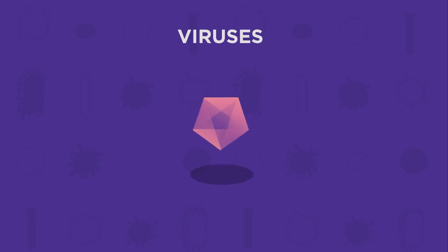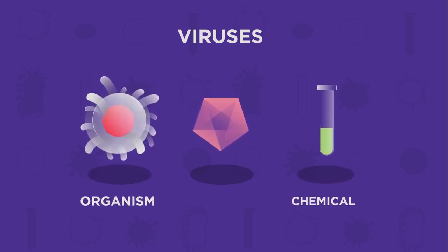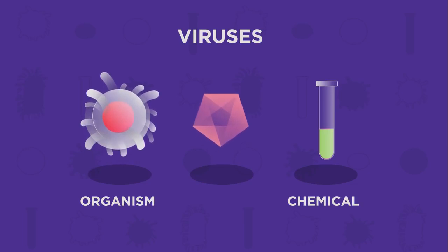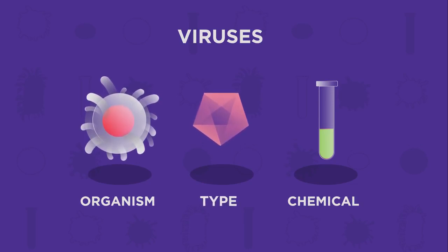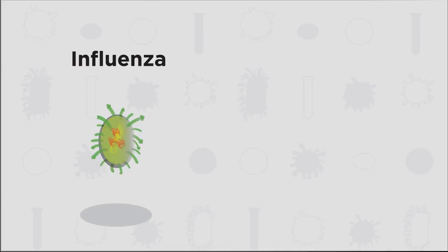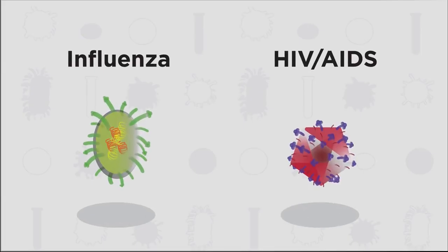As we just saw, viruses aren't made up of cells. In fact, they aren't really living. They are halfway between a living organism and a chemical. Because they aren't living, we say there are different types of virus rather than different species of virus. Some common types of viruses are influenza and HIV or AIDS.